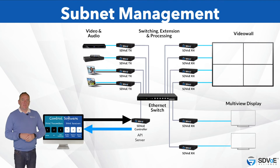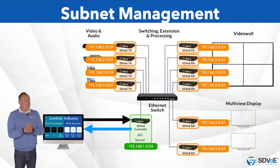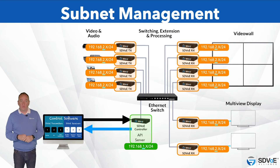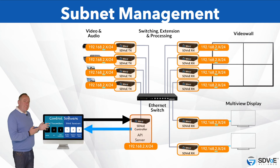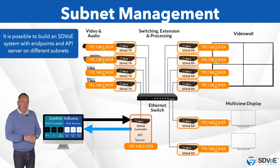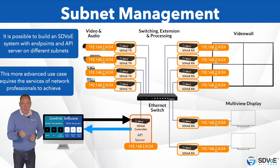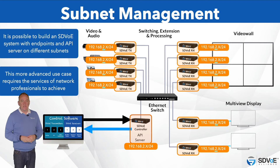If the API server is on a different subnet to the endpoints, or vice versa, they won't communicate. The quickest resolution is to make sure all endpoints and the API are on the same subnet. It is possible to build an SDVoE system whereby the endpoints and the API server are on different subnets; however, this more advanced use case will require the services of network professionals to achieve it.